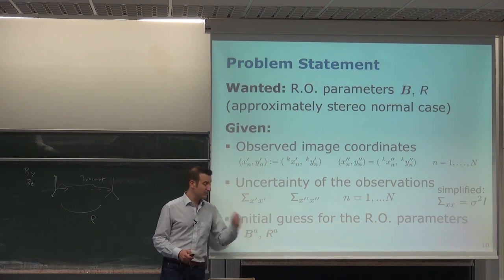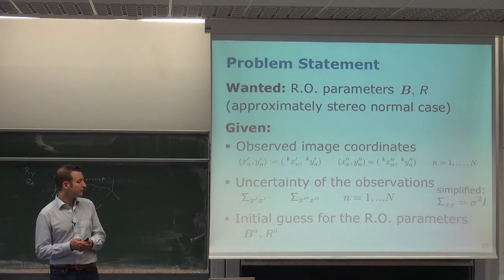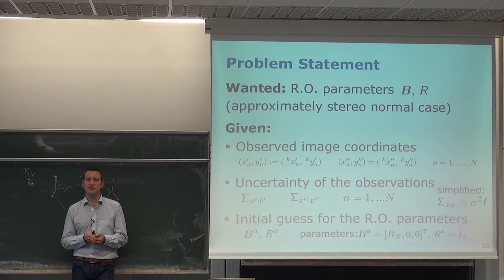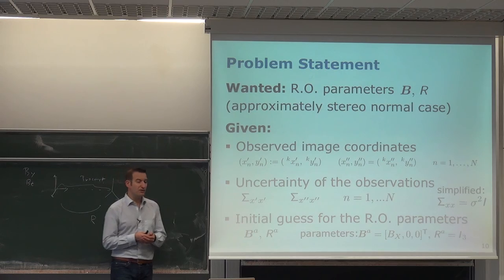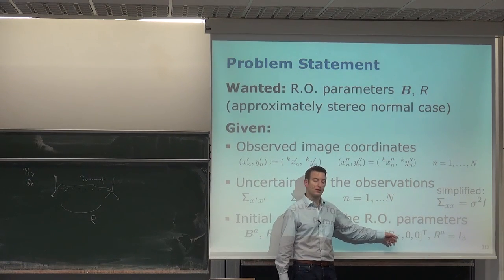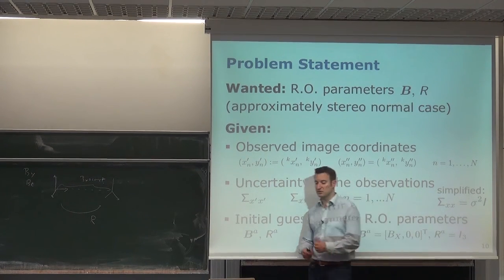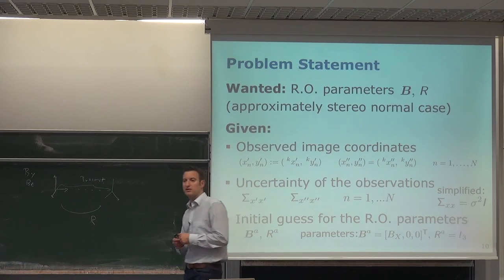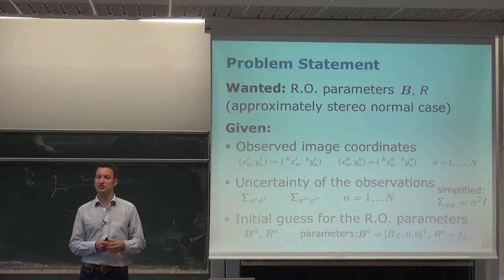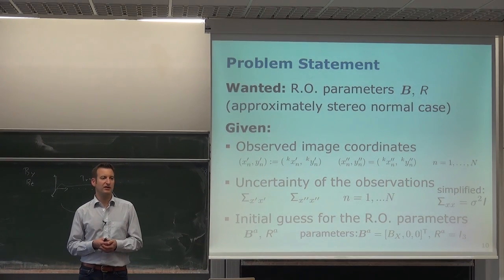We need an initial guess. All elements with superscript 'a' denote approximations. Since we assume approximately the stereo normal case, we take bx as our constant, by and bz as zero, and our initial rotation matrix as the identity matrix. If we did not make this assumption, we would need to execute the eight-point algorithm to obtain an initial guess.